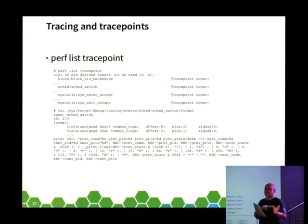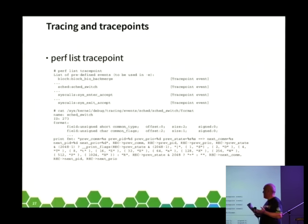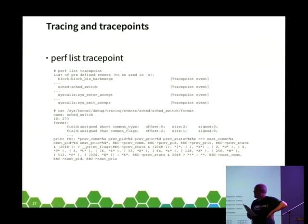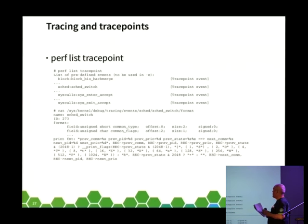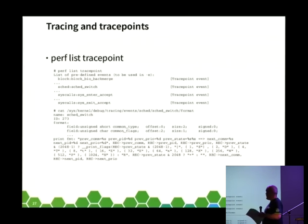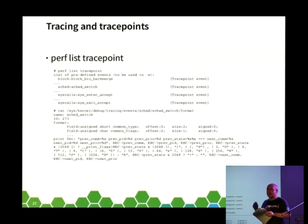Remember from perf list there were software events, hardware events, and trace points. These are the static ftrace code points that kernel developers have deemed of interest. Running 'perf list tracepoints' gives 1,486 different entries — including block:block_bio_backmerge, sched:sched_switch (invoked whenever the scheduler performs a task switch), and for every syscall, a trace point for its entry and exit. There's also a file in /sys/kernel/debug/tracing/events/<event>/format showing what the kernel outputs into the ftrace ring buffer each time that trace point fires.